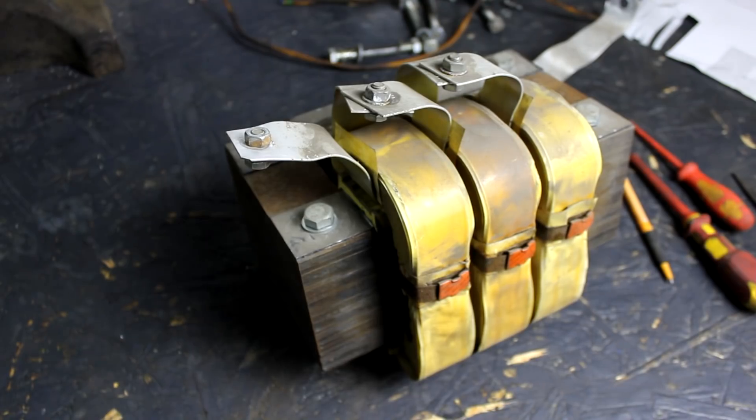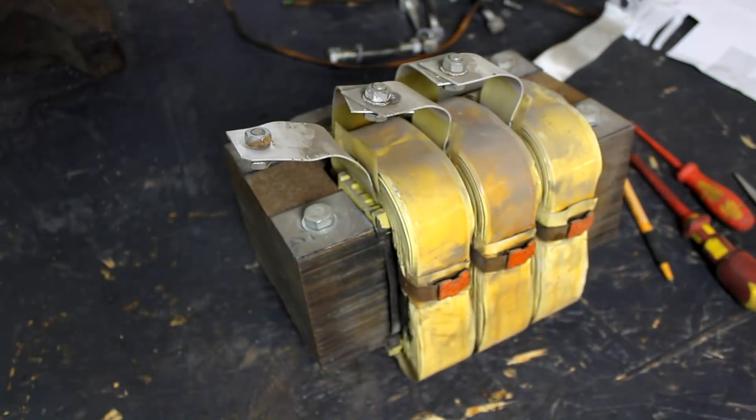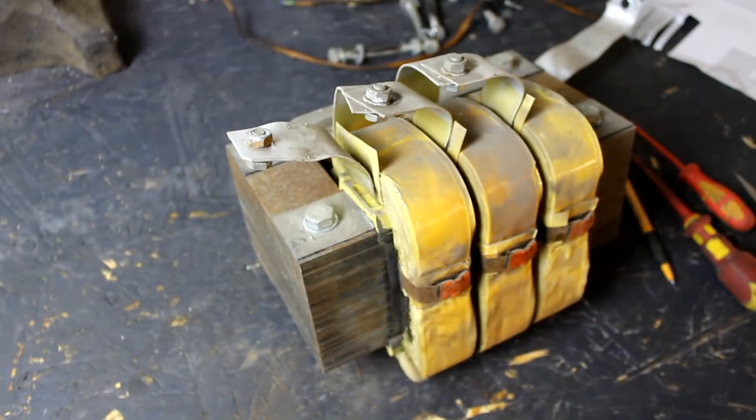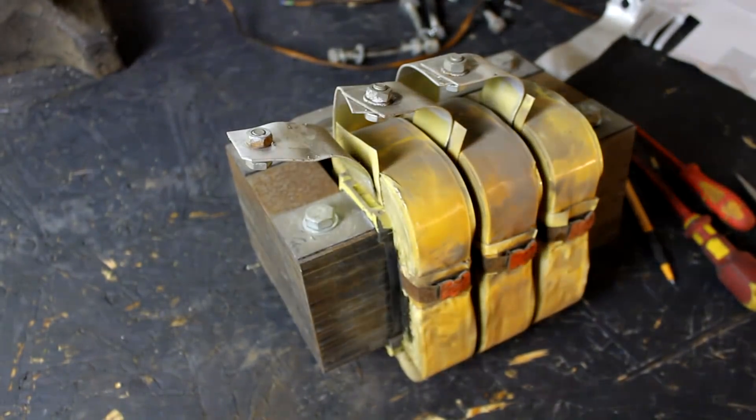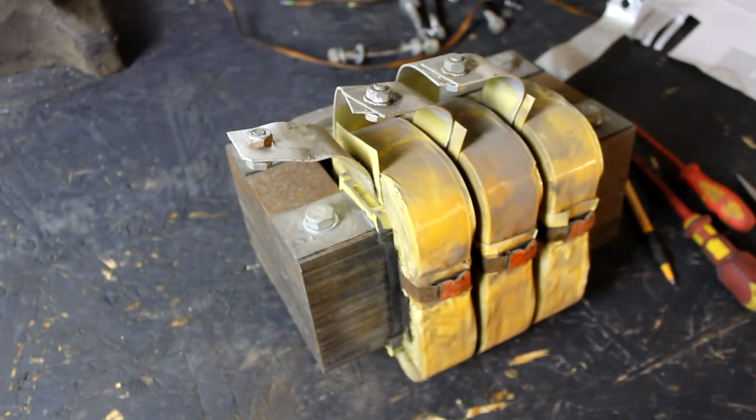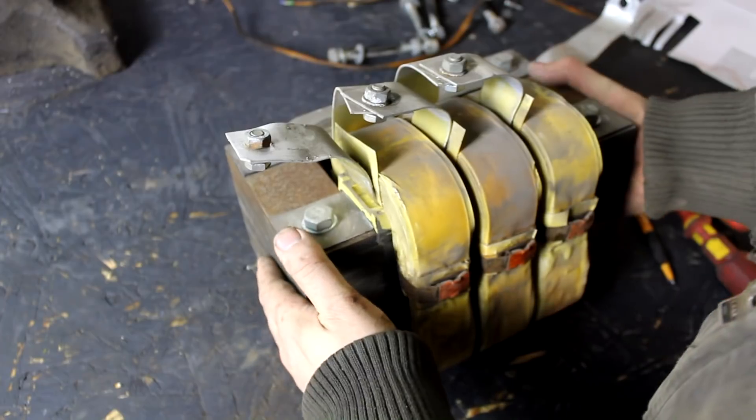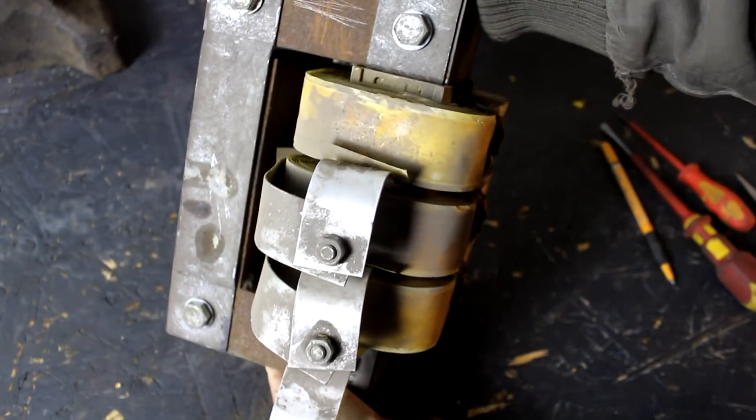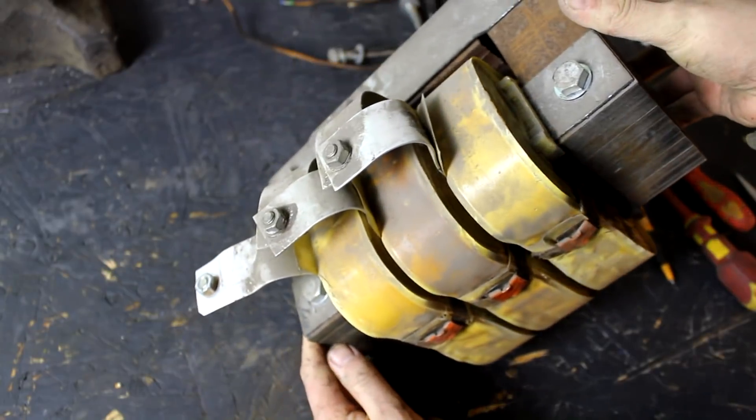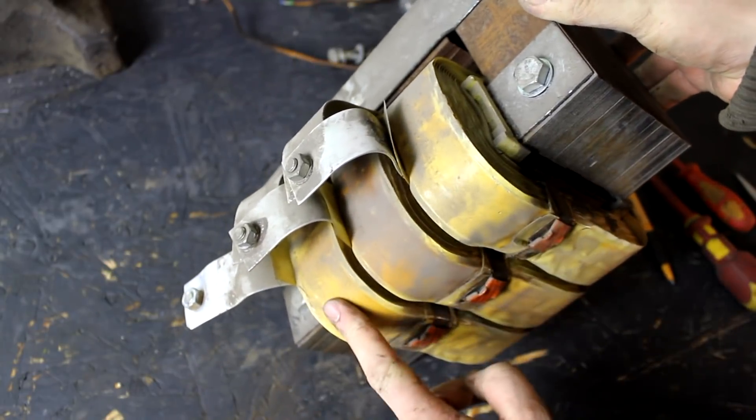And here we have our large inductor or choke. And as you can see, it is basically an iron core made from transformer lamination. And then we have three windings that are connected in series, so they effectively form one winding. And the material that was used here is simply a very malleable aluminum metal strip material.